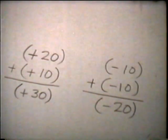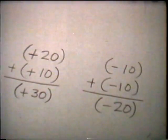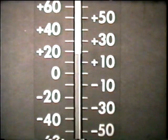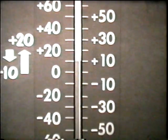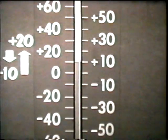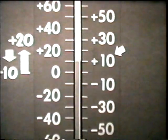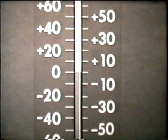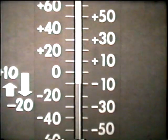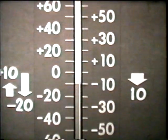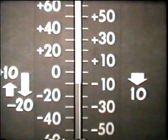Now, how do we add numbers with opposite signs, indicating opposite movement on the number line? If the column moves 20 degrees up from zero, then 10 degrees down, the total movement is 30 degrees. But we know that the net change from zero is only 10 degrees in the positive direction — a positive 10. In another example, if the column moves 20 degrees down from zero, then up 10 degrees, 10 degrees in the negative direction represents the net change from zero — a negative 10.